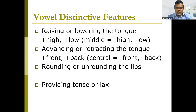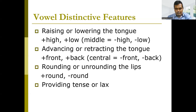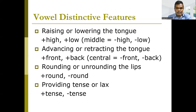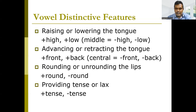By rounding or unrounding the lips, we have positive round and negative round. Positive round is produced by rounding the lips — some vowels in English are produced by making the lips round. The last feature is tense or lax. We have positive tense and negative tense — lax vowels belong to negative tense. So the distinctive features of vowels are: positive high, positive low, positive front, positive back, positive or negative round, and positive or negative tense.